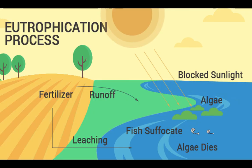Here's one last diagram of eutrophication — make sure you've got this process down: fertilizer runoff leads to an algal bloom, which blocks sunlight; the algae dies and decomposes, reducing oxygen; and the fish therefore suffocate. That's all for today — bring any questions to class.